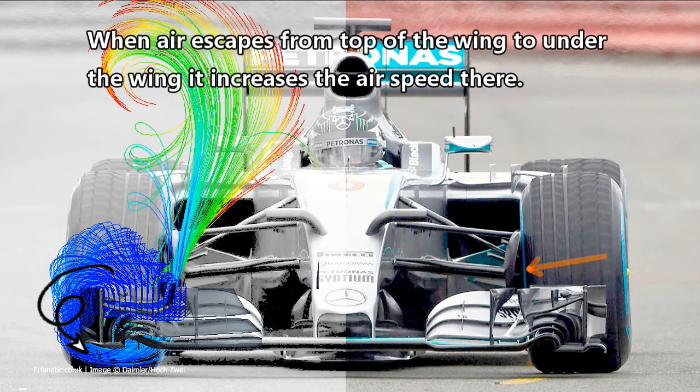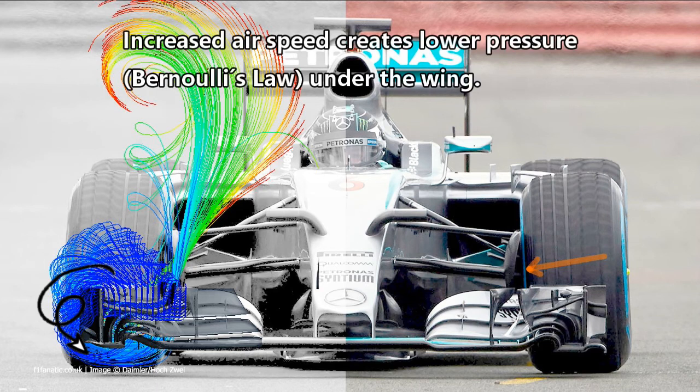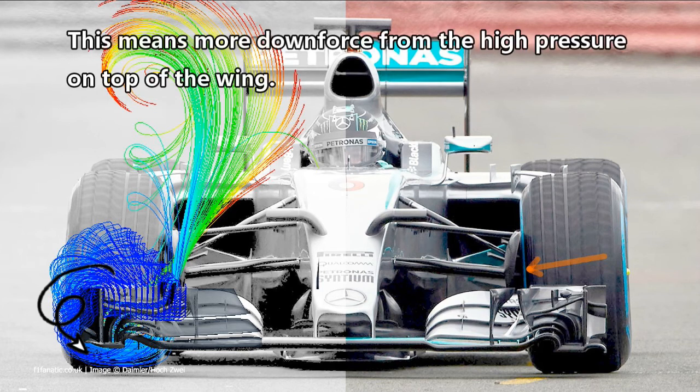When air escapes from top of the wing to under the wing, it increases the airspeed there. Increased airspeed creates lower pressure under the wing. This means more downforce from the high pressure on top of the wing.